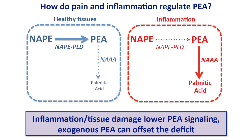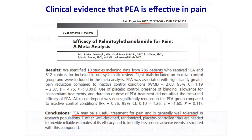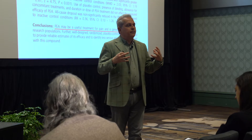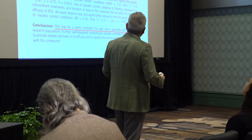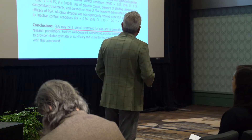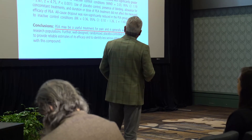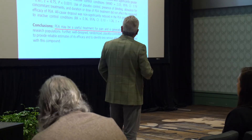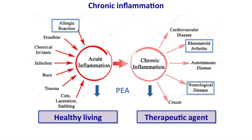Does it really work in humans? It does. PEA may be a useful treatment for pain and is generally well tolerated. That's a very important initial clinical support for the idea that PEA is an endogenous anti-inflammatory and analgesic compound. Of course, the authors also conclude that more studies are needed, and that's clearly always the case.